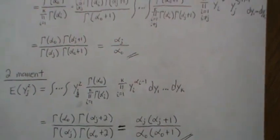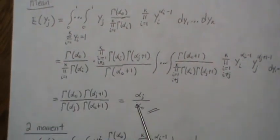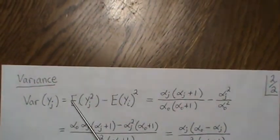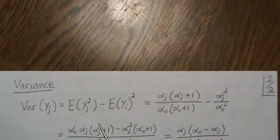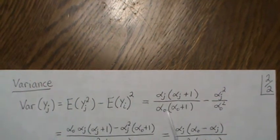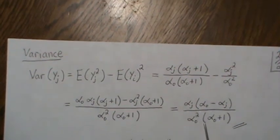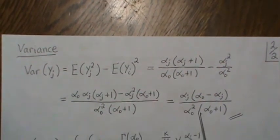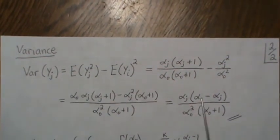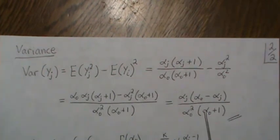But now that we have the mean and the second moment, we can calculate the variance. The variance is this formula here, so we plug in what we know, the variable, and then we simplify and it reduces to this. So this is the variance of yj, one of the Dirichlet variables.